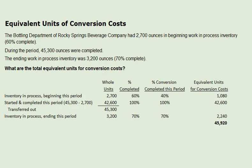But here, this is conversion costs. And with conversion costs, the percentage conversion completed this period is 40% in this problem. For the inventory in process at the beginning of this period, when 60% is completed as to conversion costs, the remaining 40% of conversion cost was added during the period. So for equivalent units for conversion costs, we take 40% times 2,700 ounces, which comes out to 1,080.